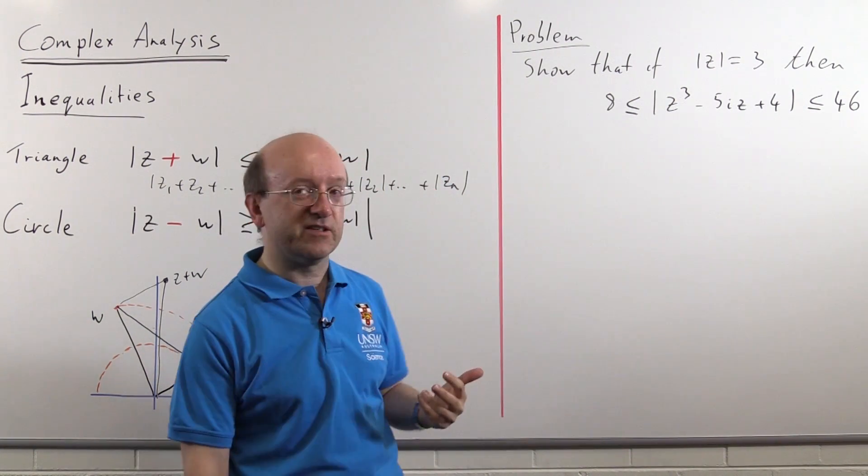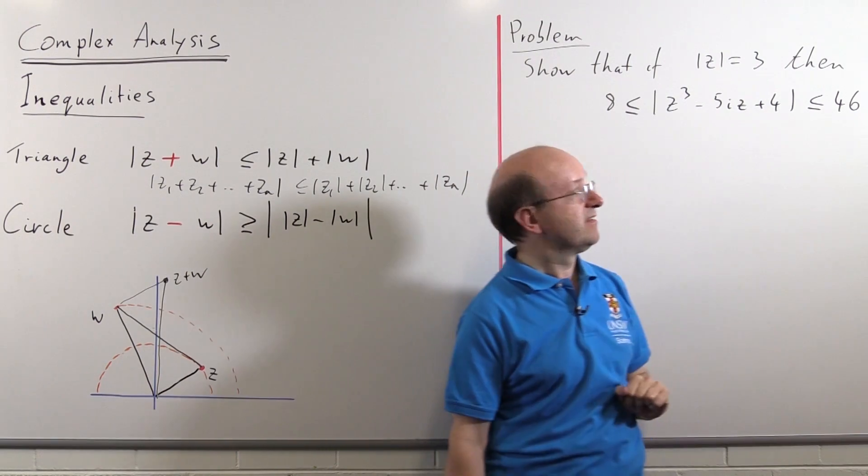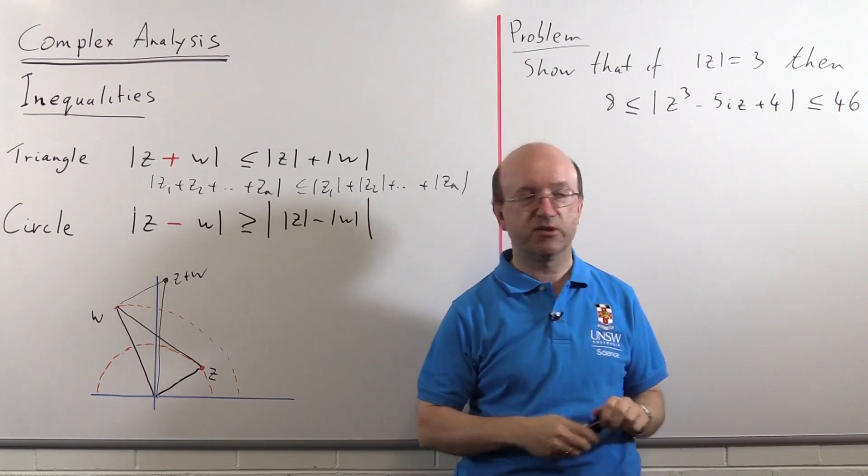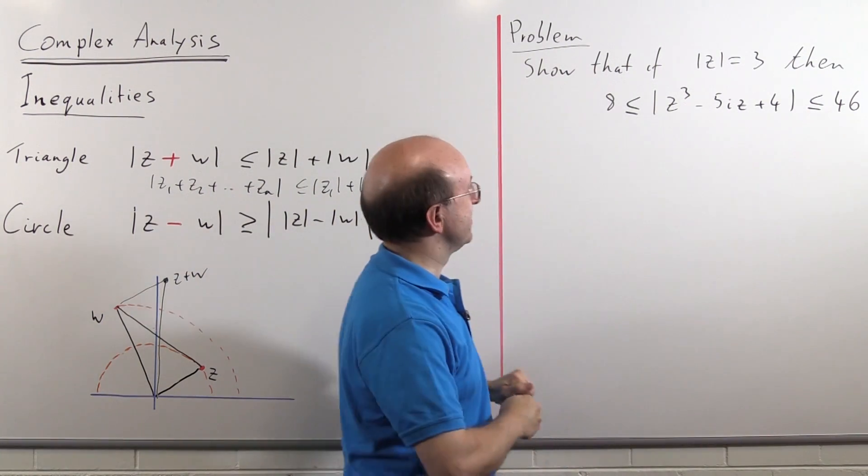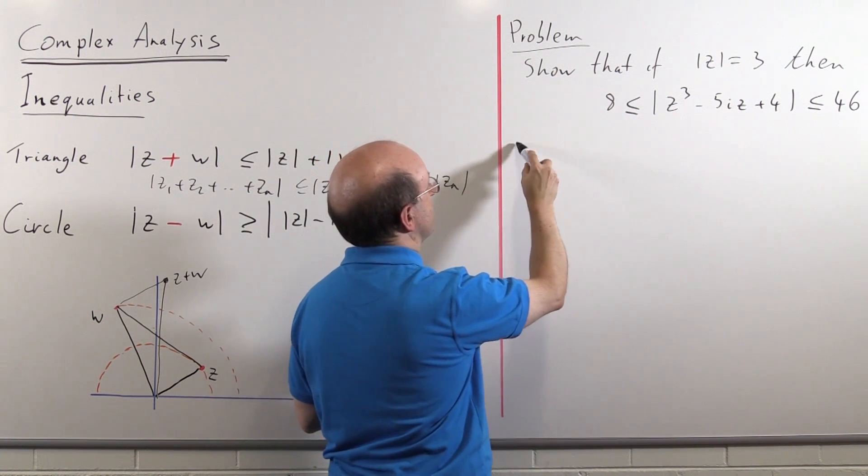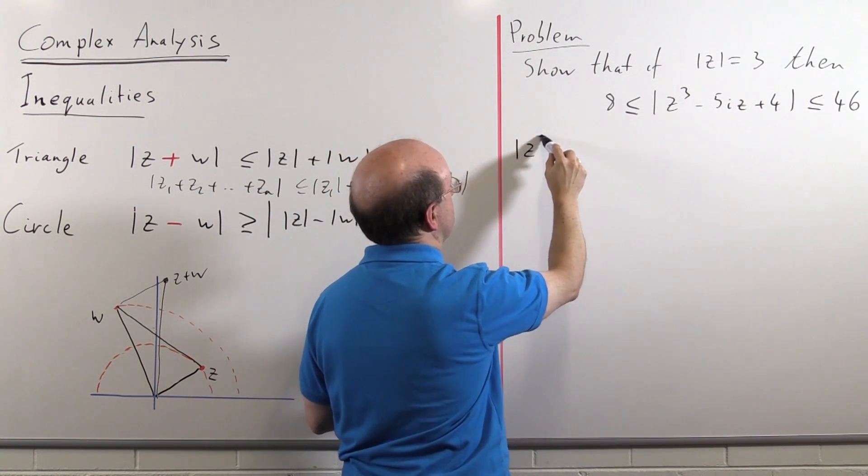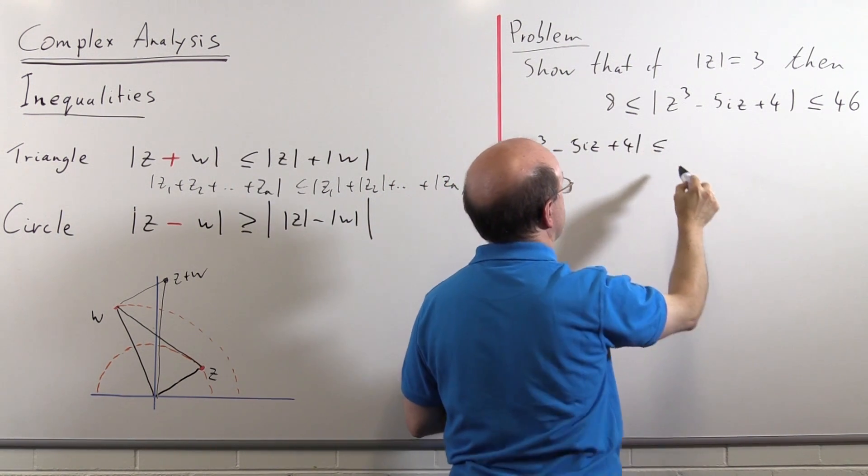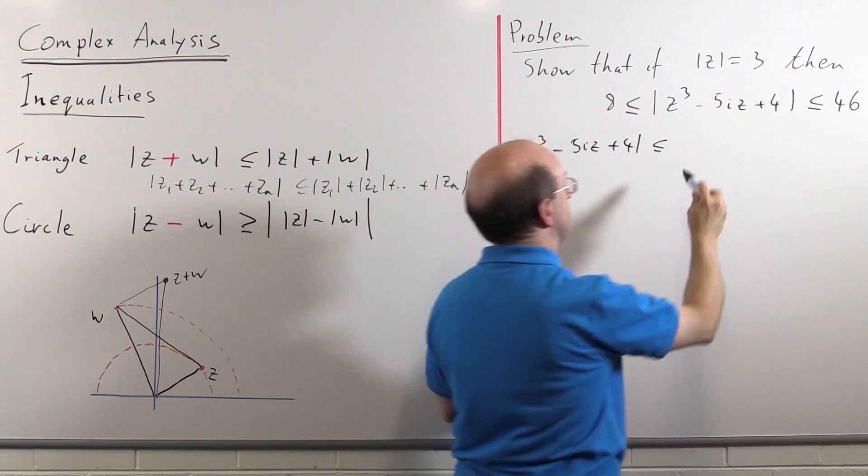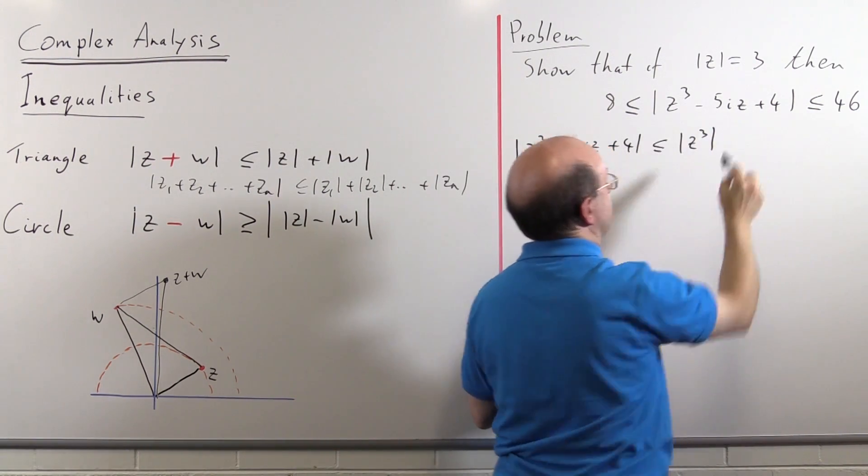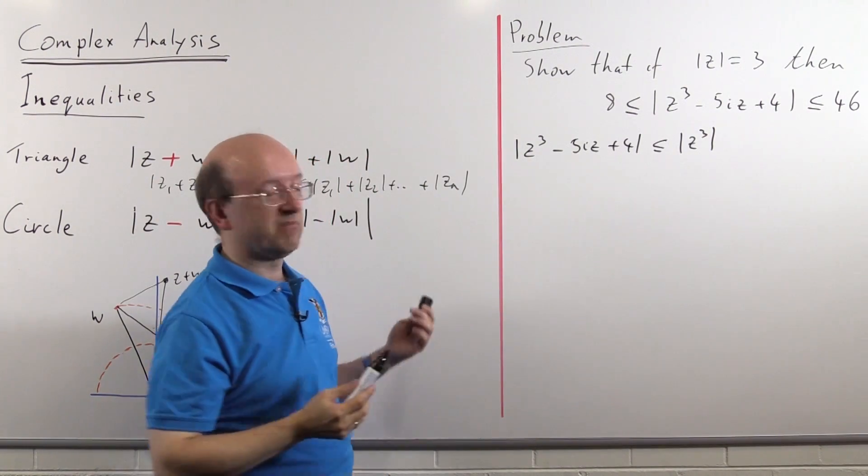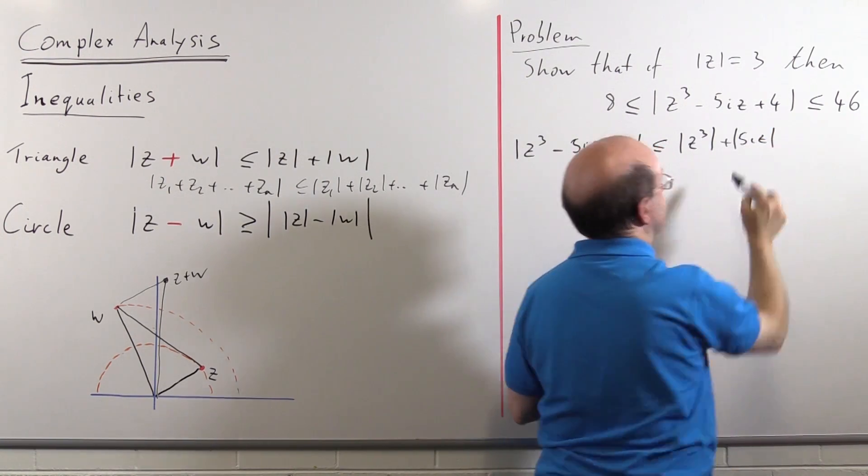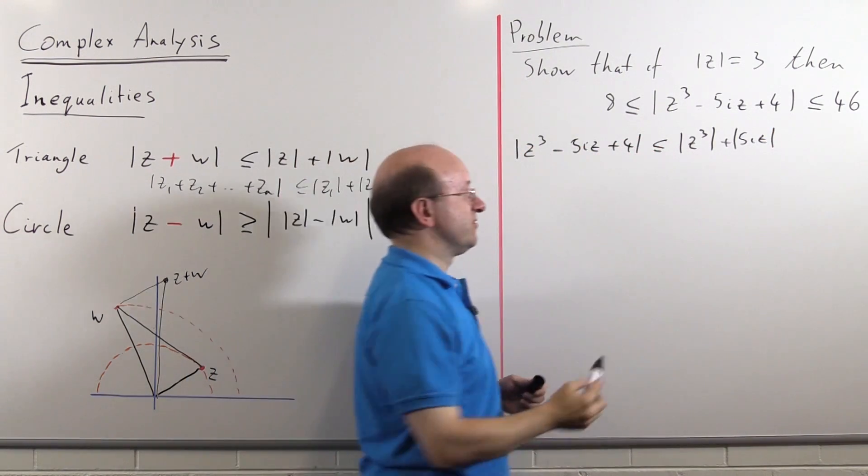Well, the first part of this is straightforward, that the less than or equal to part less than 46, because we're just going to be using a triangle inequality, which remember we can have three different terms in here, it doesn't make any difference to it. So let's do that part first. So the modulus of z cubed minus 5i z plus 4 is less than or equal to, well, the modulus of z cubed, now it's minus 5i z, but remember the minus sign doesn't matter inside here, so we just have plus the modulus of 5i z, plus the modulus of 4, which of course is just 4.